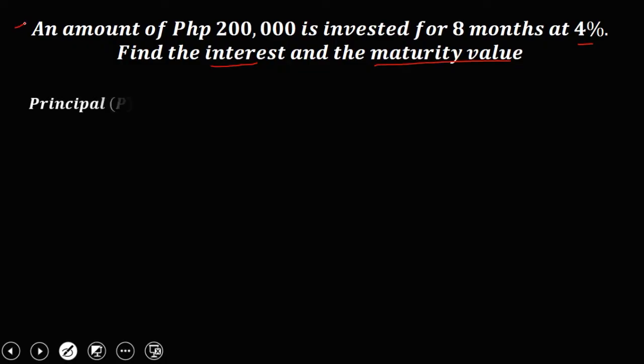Now from this given, we have the principal, that's 200,000 pesos, the time, that's eight months, and the rate, it's four percent. Then convert this four percent to decimal, it's 0.04.